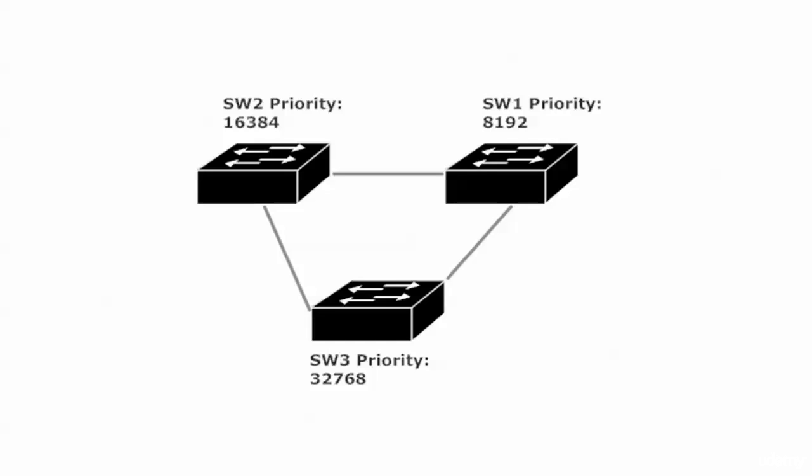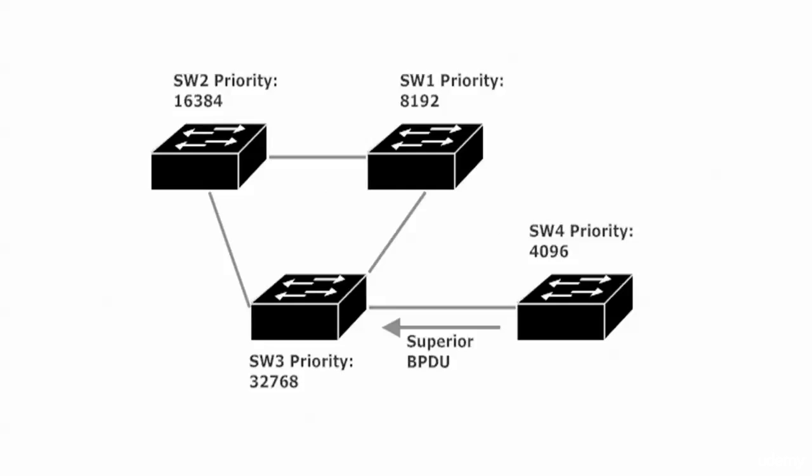The root bridge election process is not static - it doesn't happen one time and then a root gets elected and that's it. It's an ongoing process: BPDUs are being generated by the root bridge and forwarded by the non-roots, so if something happens the change can be adapted to quickly. In this case, if Switch 4 comes online with a priority of 4096 for VLAN 1, it will send a superior BPDU into Switch 3 and should quickly become the root for VLAN 1. We'll test that first, then proceed with the root guard portion of the lab.